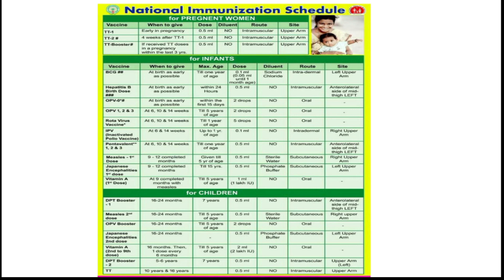For pregnant women, the first vaccine is Tetanus Toxoid dose 1 (TT1). It is given early in pregnancy, as soon as the mother knows she is pregnant. Nowadays TT is changed to TD — Tetanus Diphtheria — though the composition, dose, time period, route, and site remain the same. The dose is 0.5 ml, route is intramuscular (IM), and the site is the upper arm.